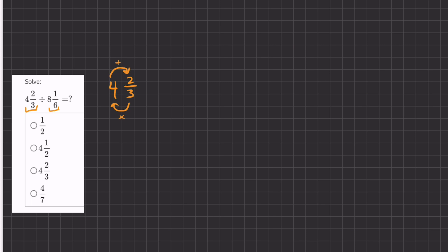So it's going to look like this. We're going to have 3 times 4 plus 2, all over our common denominator of 3. So 3 times 4 is 12, plus 2 is 14, over 3.